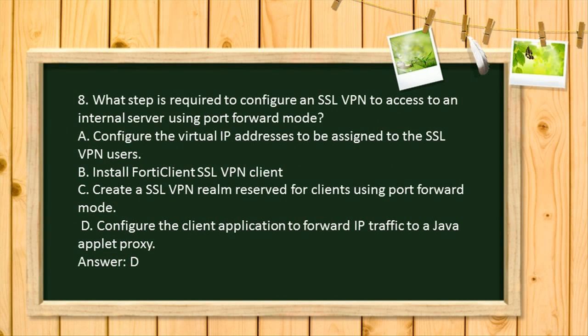Question 8. What step is required to configure an SSL VPN to access an internal server using port forward mode? A. Configure the virtual IP addresses to be assigned to the SSL VPN users. B. Install FortiClient SSL VPN client. C. Create SSL VPN realm reserved for clients using port forward mode. D. Configure the client application to forward IP traffic to a Java applet proxy. Answer: D.